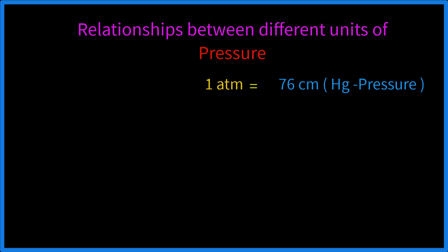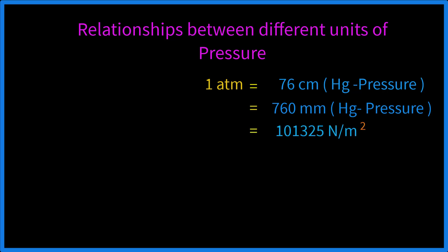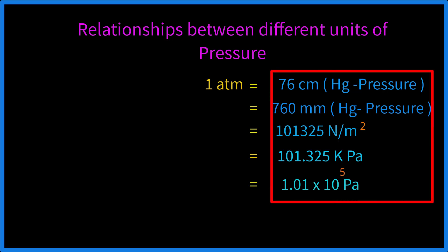1 ATM equals 76 centimeter mercury pressure, equals 760 millimeter mercury pressure, equals 101325 Newton per meter square, equals 101.325 kilopascal, equals 1.01 × 10⁵ Pascal. Now we will learn how to convert these different pressure units to ATM.